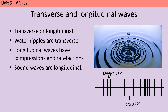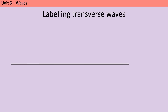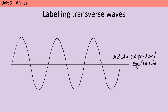Unit six is the waves topic. Waves can be either transverse or longitudinal. In a transverse wave the oscillation is perpendicular to the direction in which the wave is travelling. In a longitudinal wave the direction of the wave and the direction of the oscillation are parallel — going in the same direction. Ripples on the surface of water are an example of a transverse wave. Longitudinal waves show areas of compression where the particles are close together and rarefaction where they're spread out. Sound waves travelling through air are an example of a longitudinal wave. You should be able to label a transverse wave: the peaks are the highest points and the troughs are the lowest points.